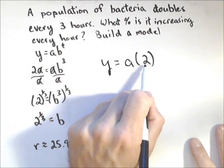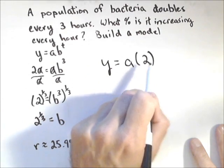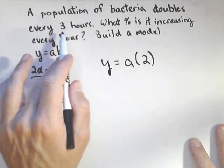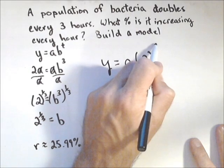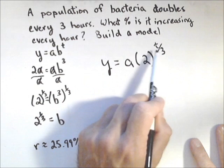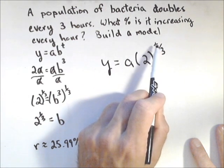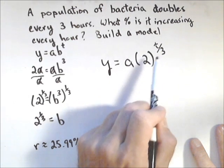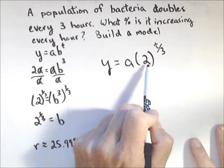I know it's going to double, so I'm going to put a two here. And now it takes three hours to double. So what I'm going to do is write my exponent as t over three, because what that does is it basically says, okay, if I put in three here, I get an exponent of one, so it multiplies my initial by two.